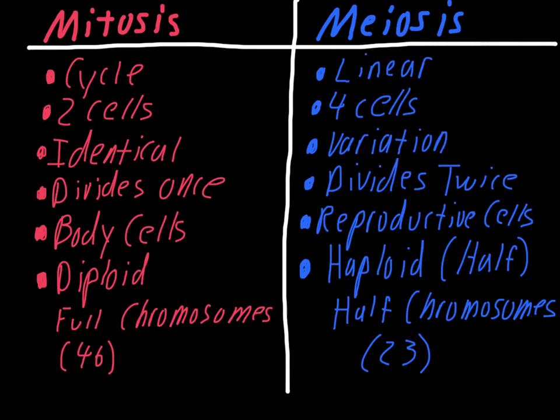Things like fruit flies only have 8 chromosomes — it totally depends. Plants are usually much more complex than animals, so they'll have more chromosomes than animals do. But the number doesn't really matter. The diploid number is always the full set, and the haploid number is always going to be half of that number.